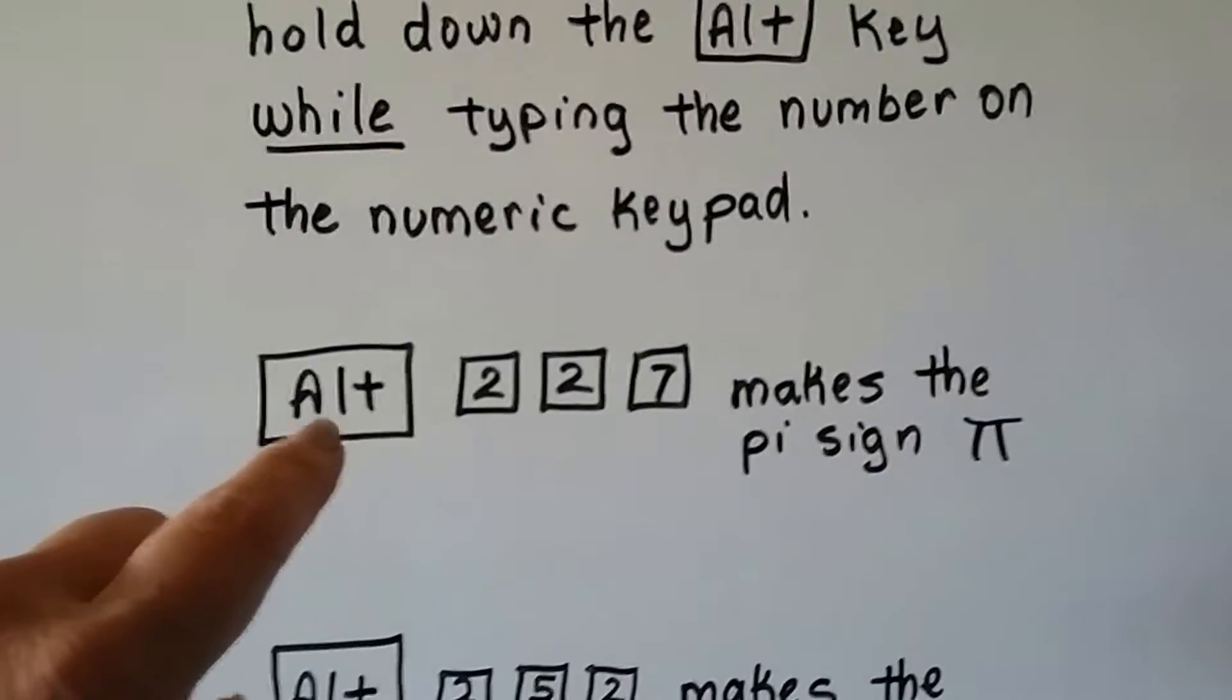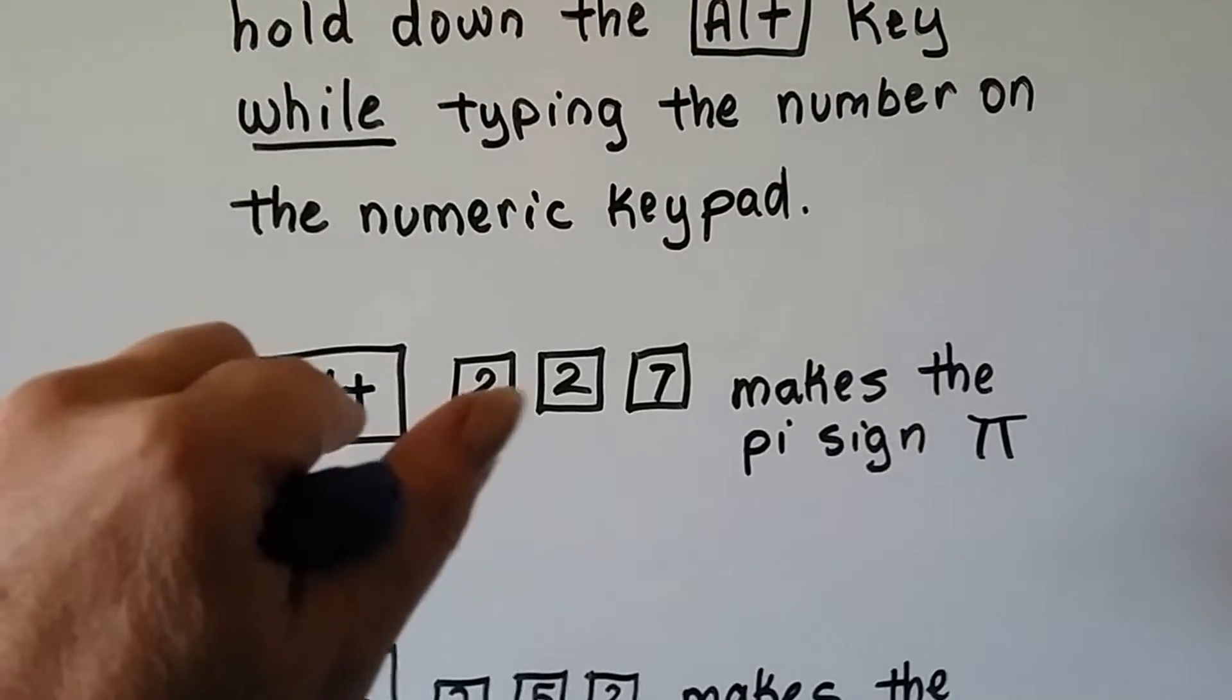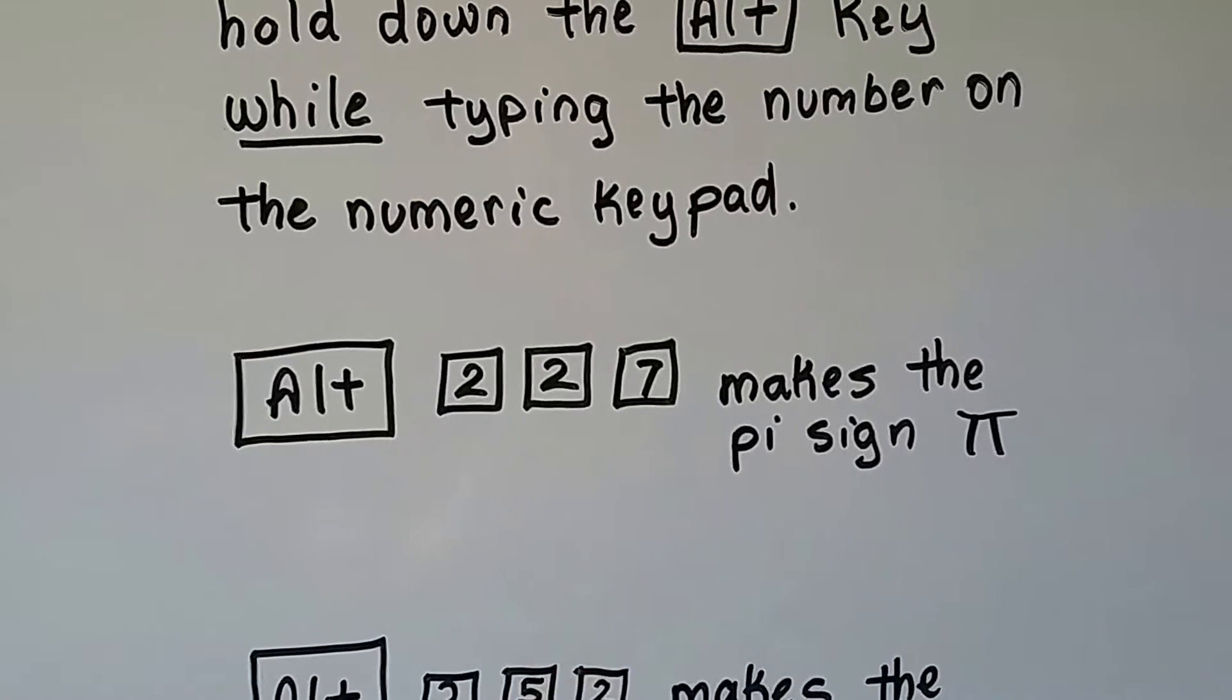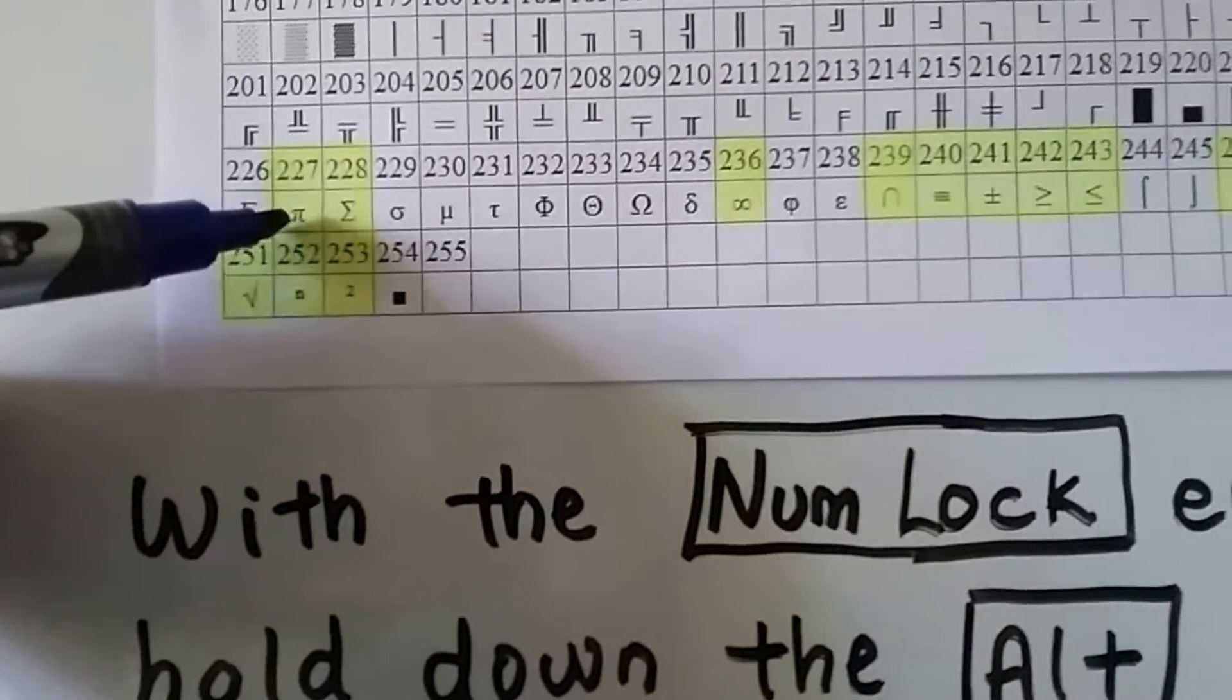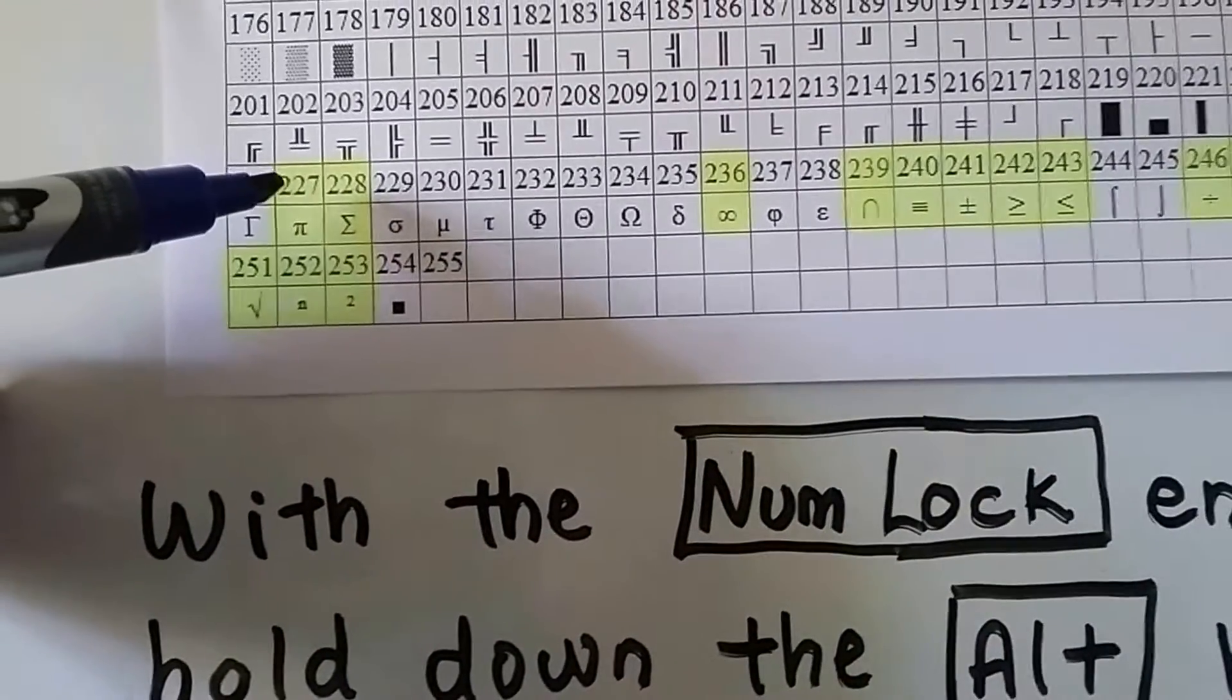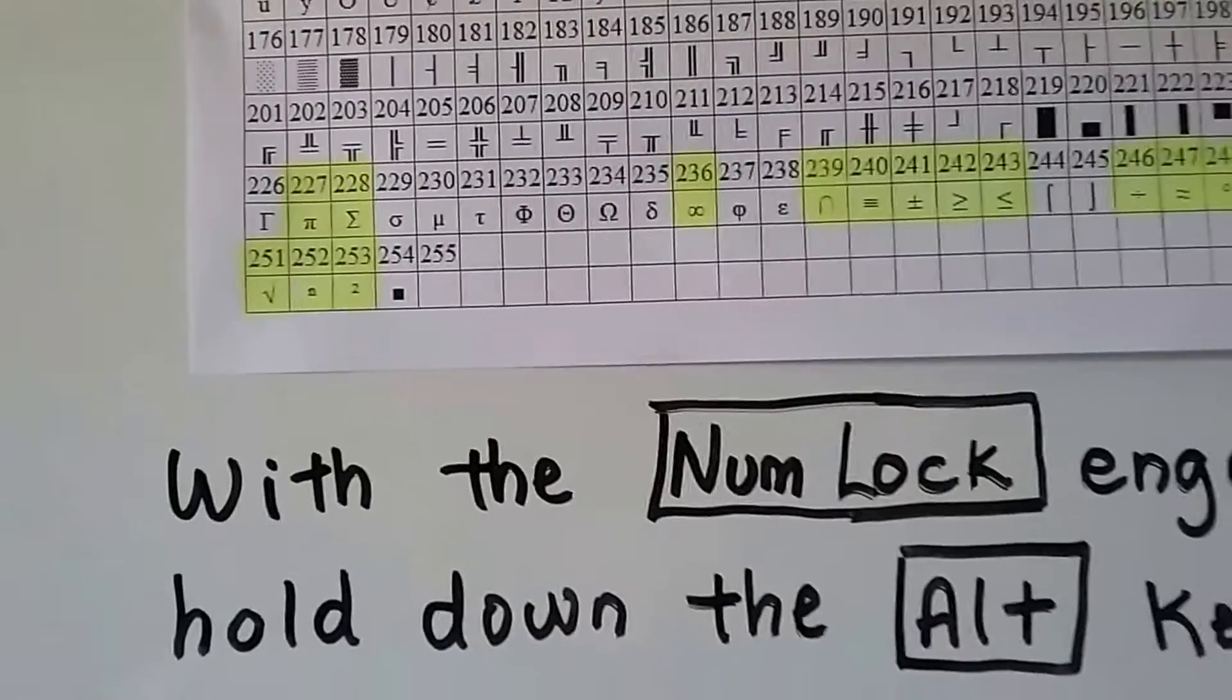If you held down ALT and then typed in 227, it would make a PI sign. You hold down the ALT key while typing 227 and you'll make a PI symbol.